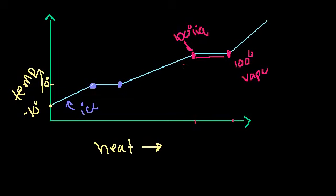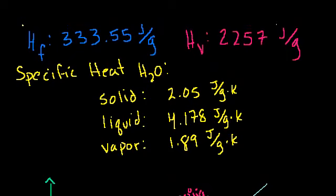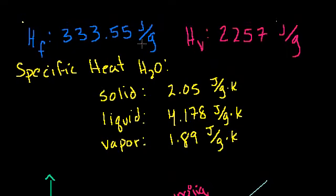Now, I want to deal with real numbers — exactly how much heat is required for these different things to happen. We can look up specific values, and these are specific to the different states of water. If you looked up any other element or molecule, you would have different values for these numbers.